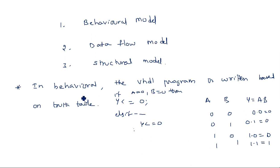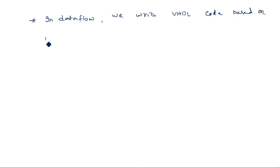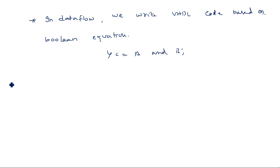In data flow model, we write the VHDL code based on the boolean equation. Simply: 'Y <= A and B' — just this AND operation gives you all the required combinations of the output.